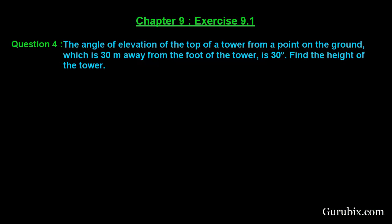Welcome friends. Let us solve question number 4 of exercise 9.1 of chapter 9. The question says the angle of elevation of the top of a tower from a point on the ground which is 30 meters away from the foot of the tower is 30 degrees. Find the height of the tower.